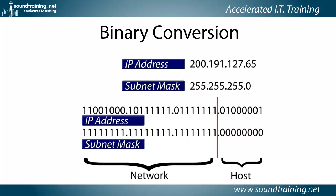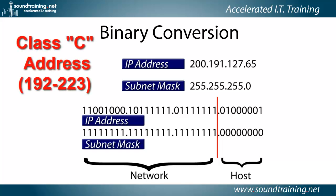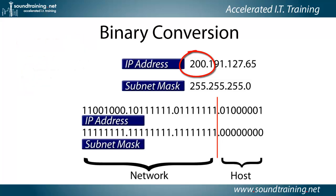What class is the address 200.191.127.65? That is a class C address. We know that because the value of the leftmost octet falls within the range of 192 to 223 inclusive, which makes it a class C.